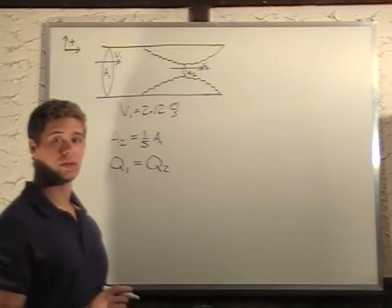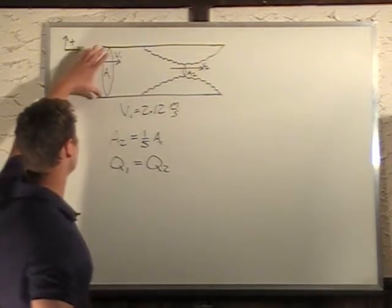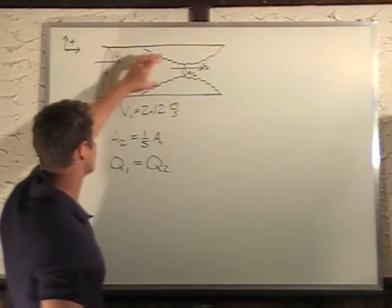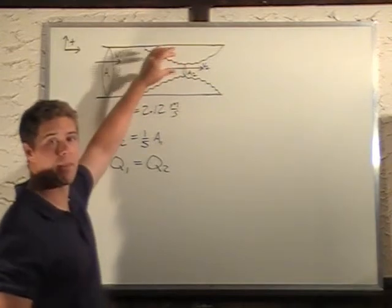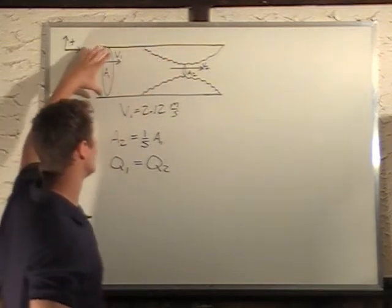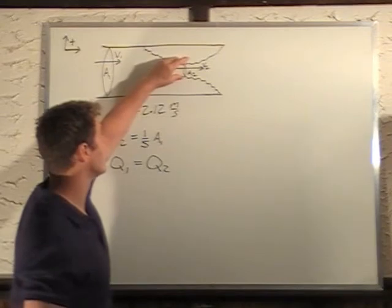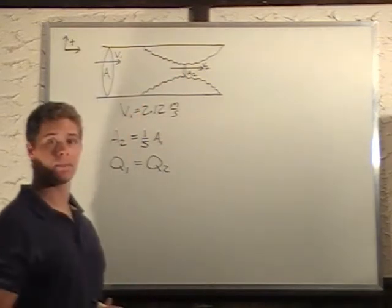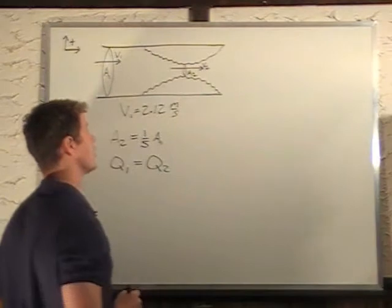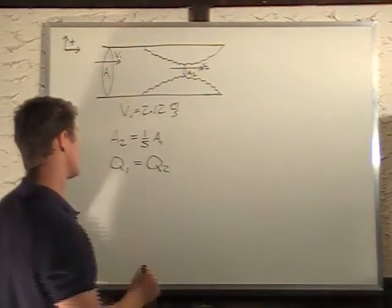And as mentioned in the previous problem, when you have a flow rate here, if it constricts, you have to have the same amount of water going through this pipe in the same amount of time. So you're going to have to speed it up since the area is so much smaller. So Q1 equals Q2, where Q is equal to area times velocity.